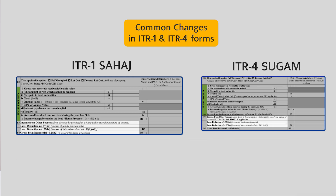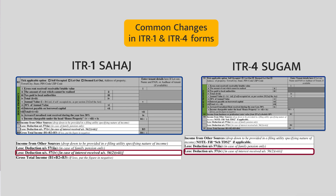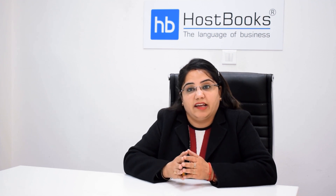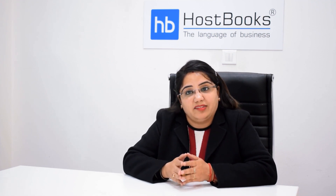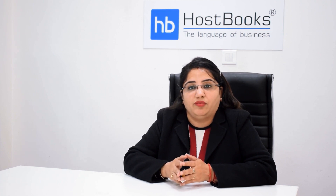In other source income, there is a section that is a deduction under Section 57(4). Section 57(4) says that whatever interest you have received under Section 56(2)(8) — interest on compensation or enhanced compensation as referred to in sub-section 1 of Section 145B — you will get a 50% deduction on that interest under Section 57(4).